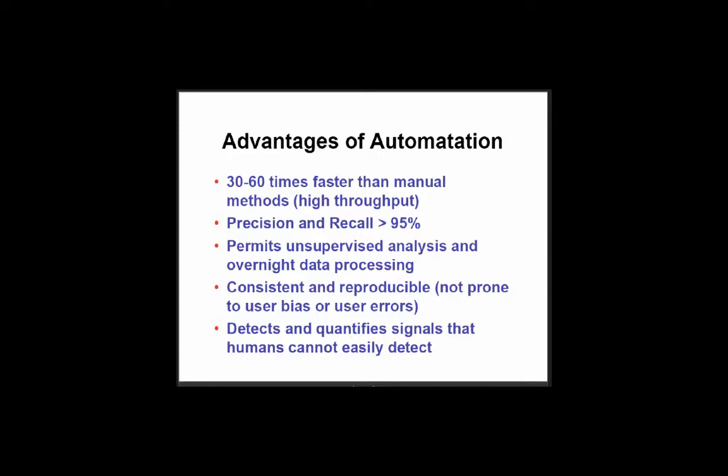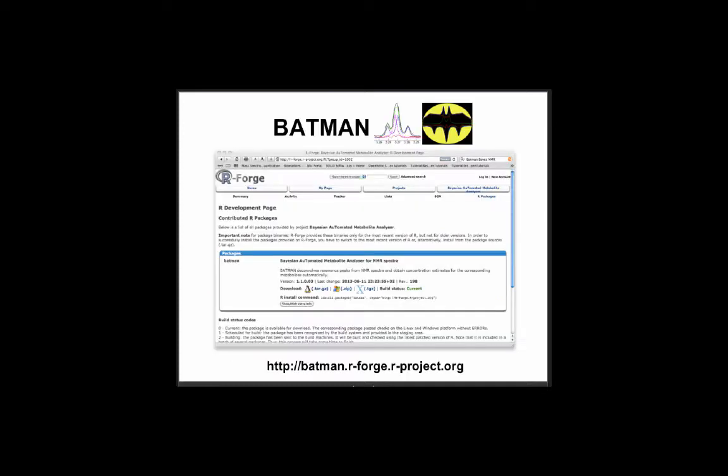This is all 1D NMR. There are some tools that allow analysis with 2D, but the problem with 2D is it's not quantitative — it's good for identification, but peak intensities vary considerably with 2D NMR. That's why we're focusing on 1D here. I mentioned Batman: you can download and install the program, but it's just incredibly slow.